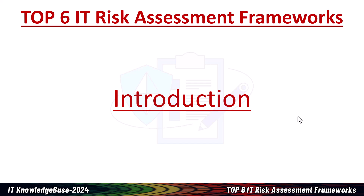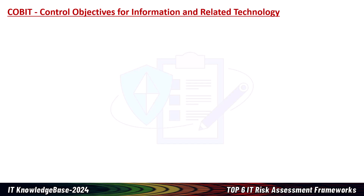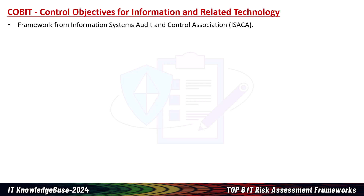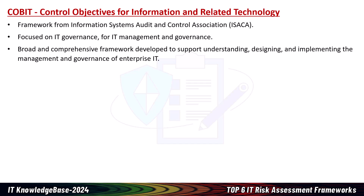Here are the top six IT risk assessment frameworks. Number one: COBIT — Control Objectives for Information and Related Technology — is a framework from the Information Systems Audit and Control Association, or ISACA, an international professional association focused on IT governance, IT management, and governance. It's a broad and comprehensive framework developed to support understanding, designing, and implementing the management and governance of enterprise IT.